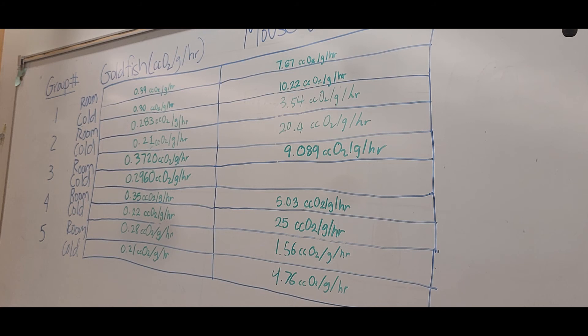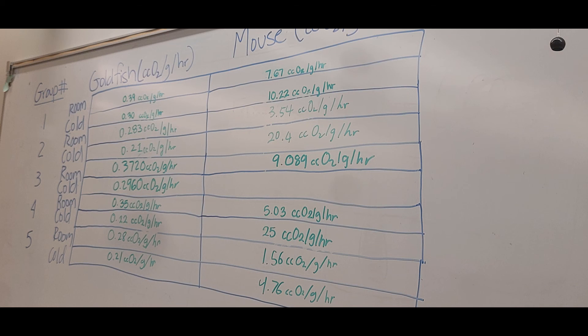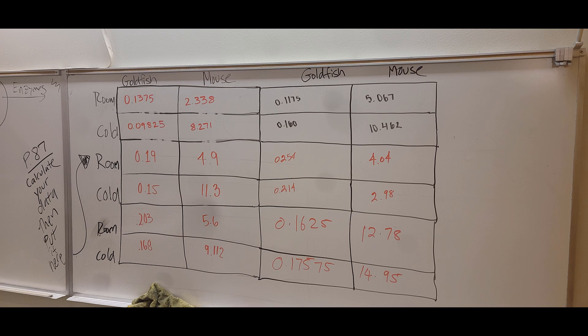To calculate metabolic rate, multiply your count by 0.025, which will give you the metabolic rate. This data was collected from our class and you can use it to check your calculations and make sure your data comes out pretty close.